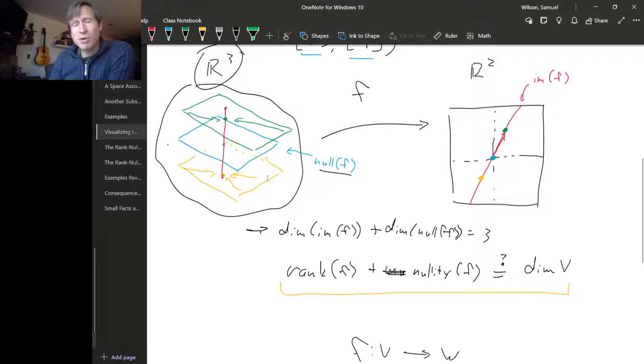So this sort of two-step process of thinking about what a linear transformation does really does capture some important properties of what linear maps do.